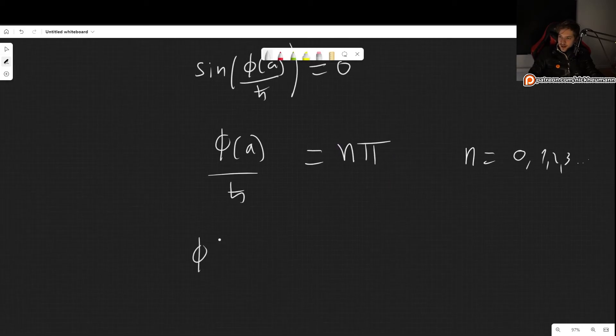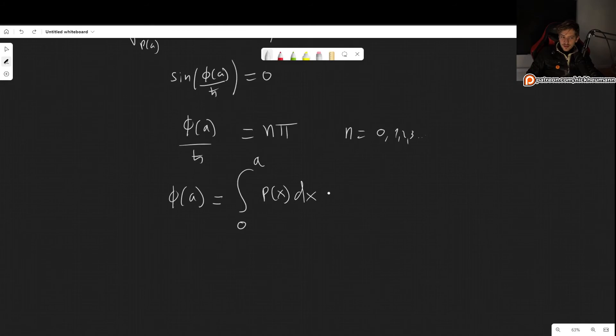And this means that phi of a, which is the integral from zero to a of our momentum, this is equal to n pi h bar, simply multiplying that h bar. And this is, of course, equivalent to writing integral from zero to a of the square root of 2m e minus v of x dx, this is equal to n pi h bar. So this is our main result.